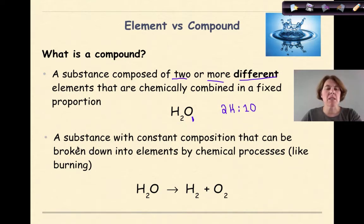A compound is also defined as a substance with constant composition, that means the same throughout, that there's no variation whatsoever. A substance with constant composition that can be broken down into elements by chemical processes like burning. So in a compound, a compound can actually be broken down into its individual elements that it's composed of. In this case, if we look at the example of water, water can be broken down to hydrogen gas and oxygen gas through a process called electrolysis, which we'll talk about later on in the year.